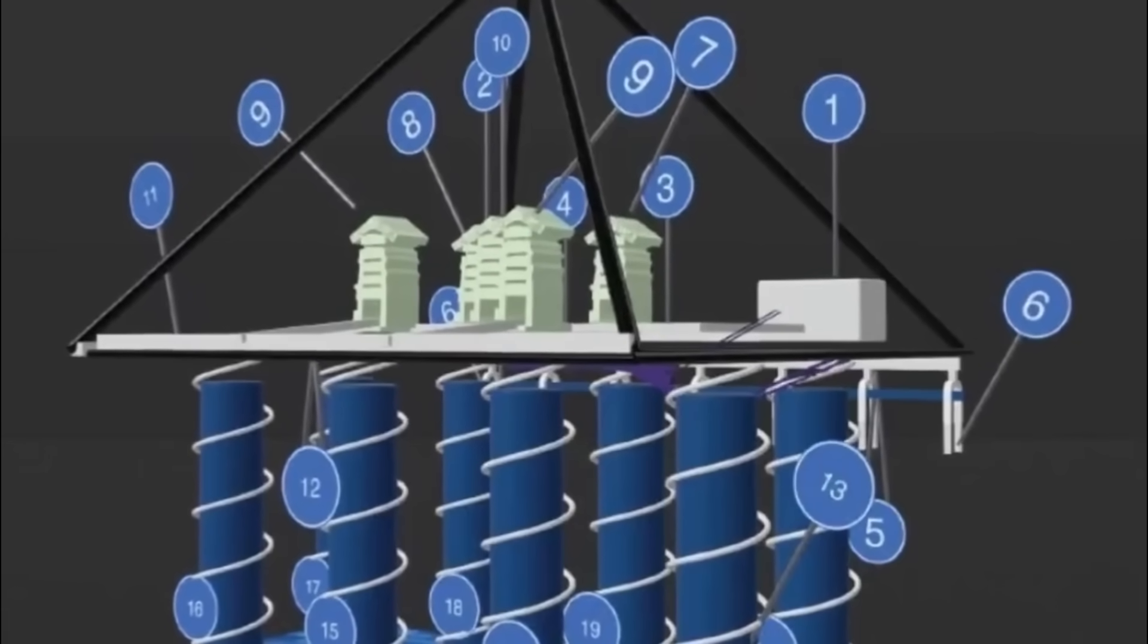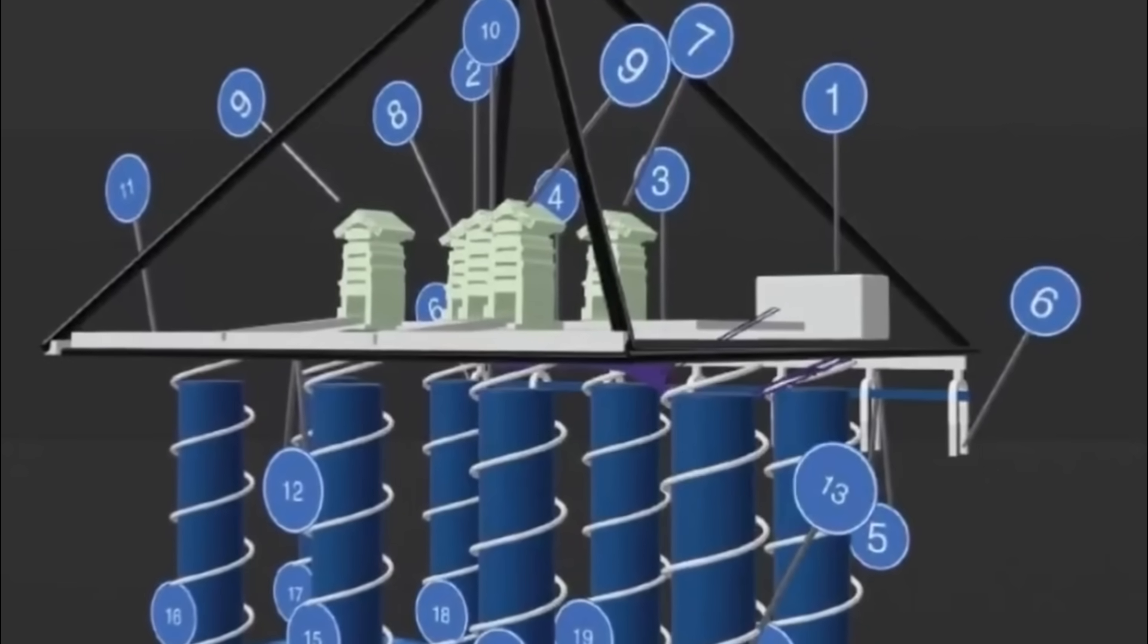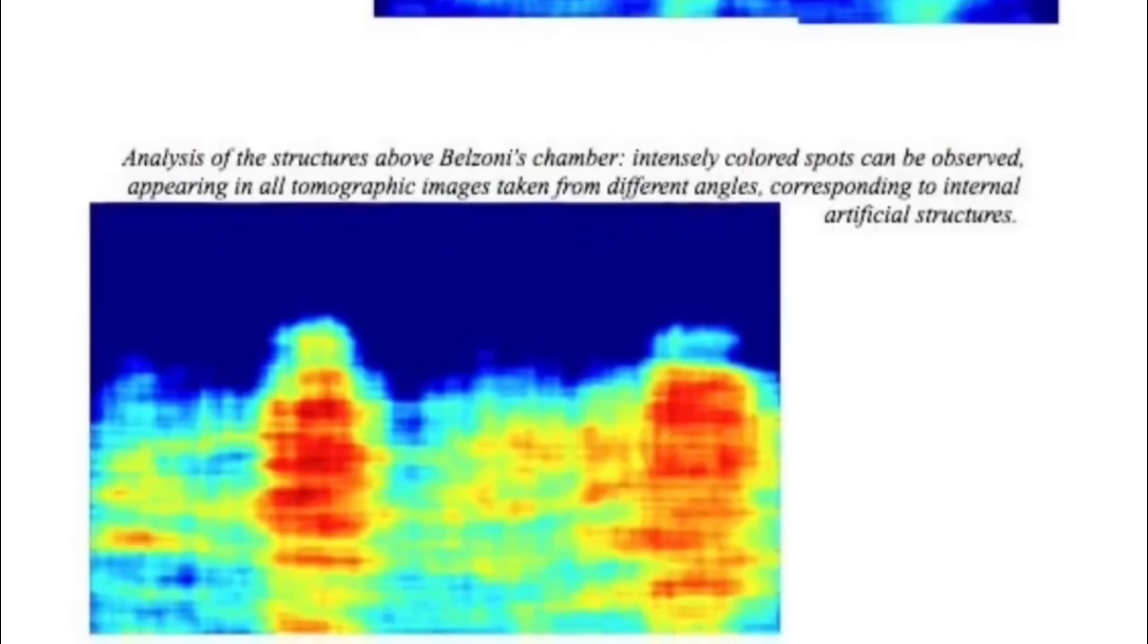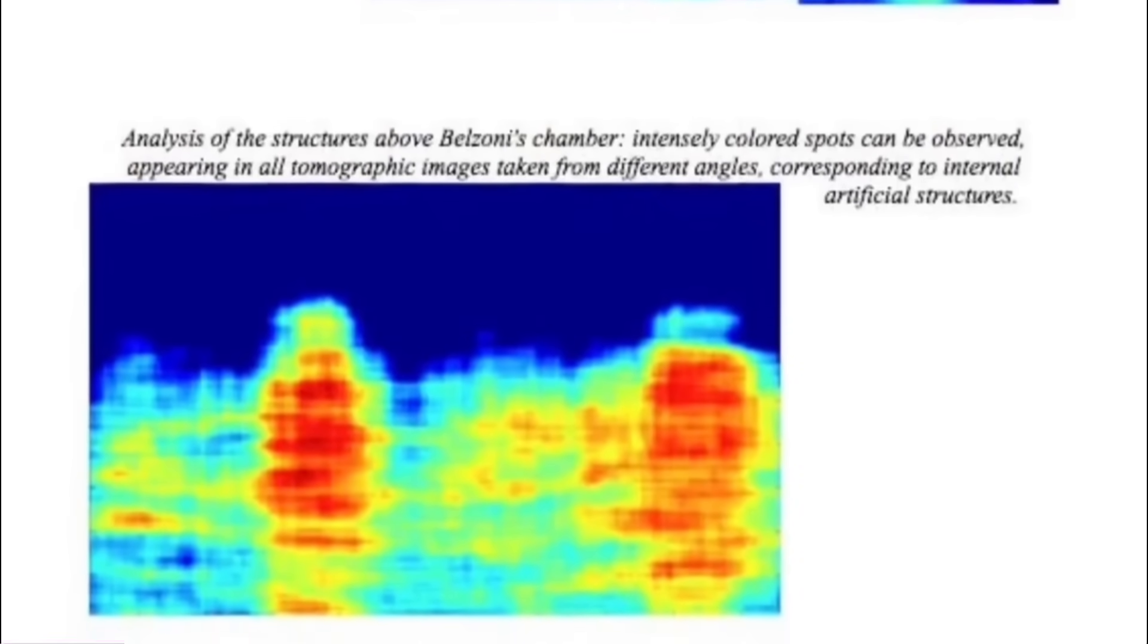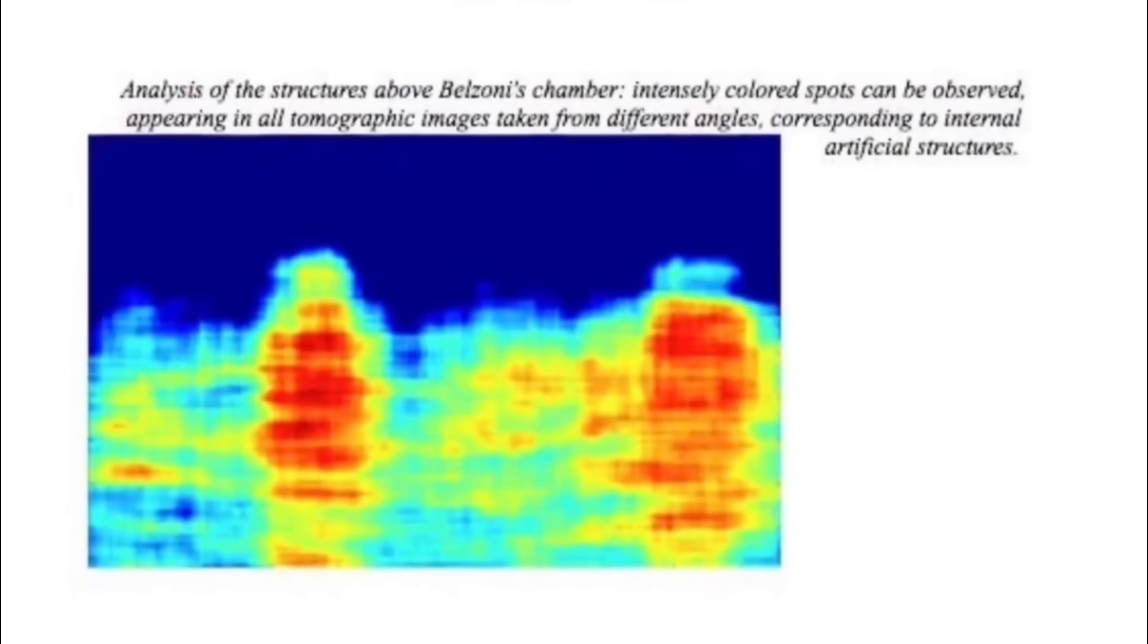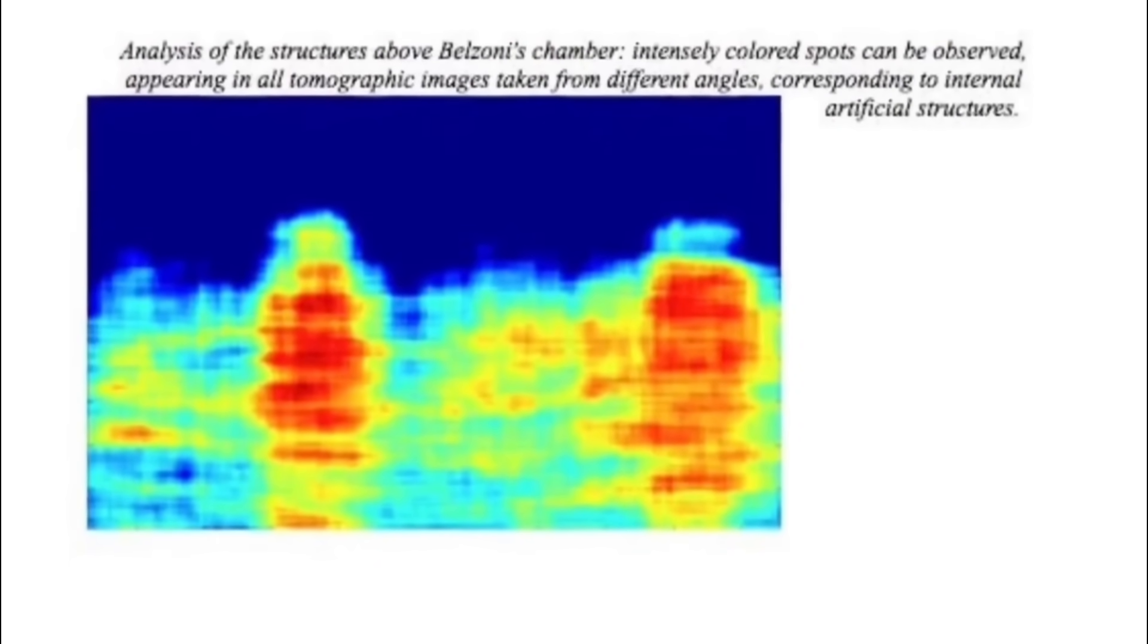Below, we present some images from our 3D analysis. The analysis of the structures above Belzoni's chamber are intensely coloured spots which can be observed appearing in all tomographic images taken from different angles corresponding to the internal artificial structures.